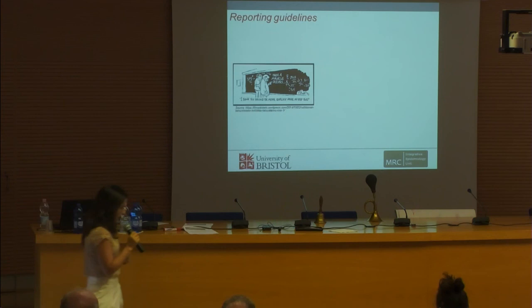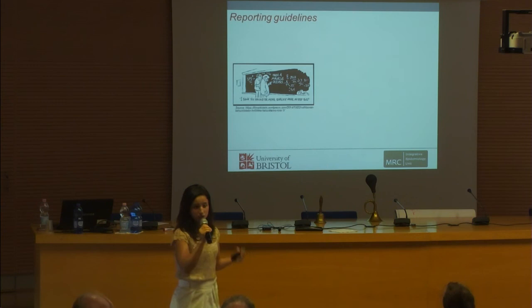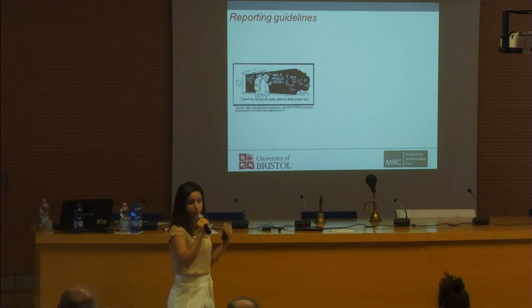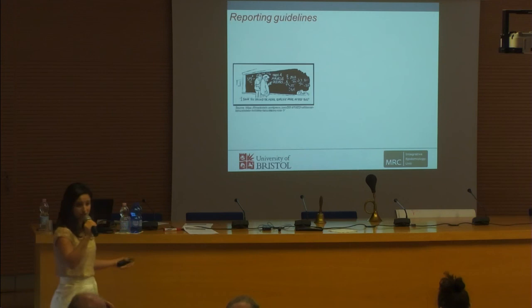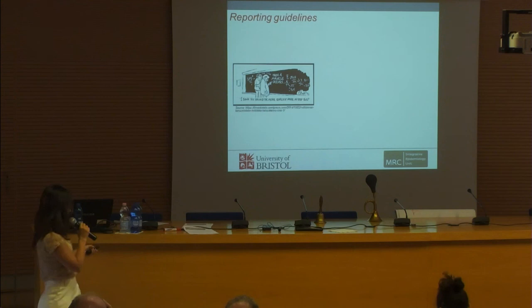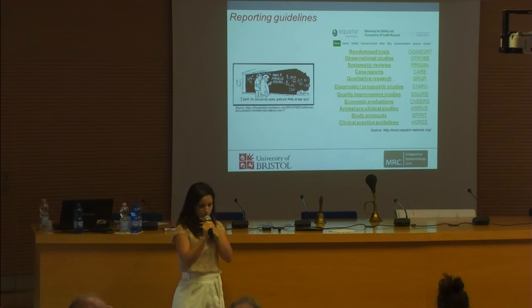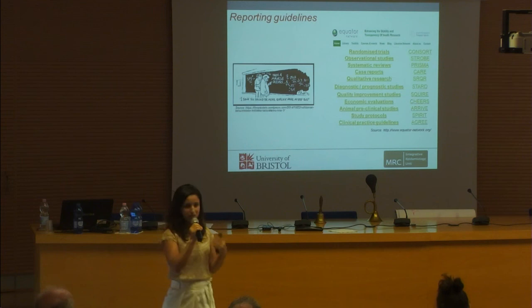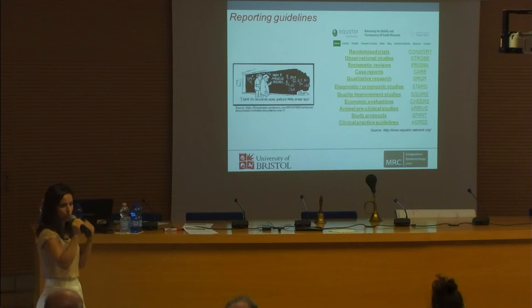Another aspect still related to transparency is reporting. You could conduct a very good study, but if you report it poorly, it's not useful — not for judging what was done, not for replication, and not for systematic reviews and meta-analyses. The Equator Network has been encouraging the use of reporting guidelines such as CONSORT, STROBE, PRISMA, and others. These are not meant to tell you what to do, but give guidance on the minimal set of information you should report to make your research more transparent and useful.